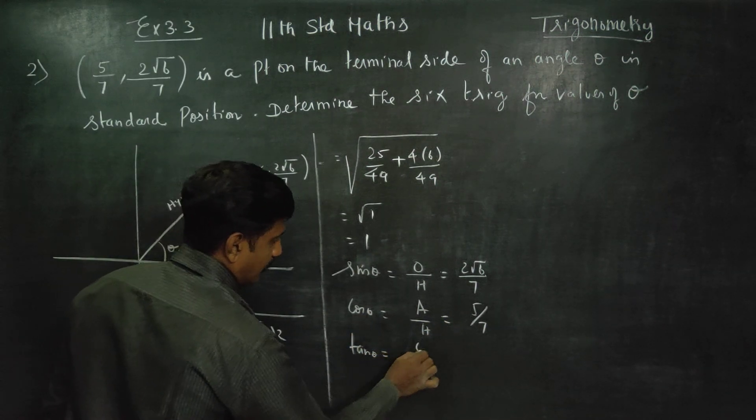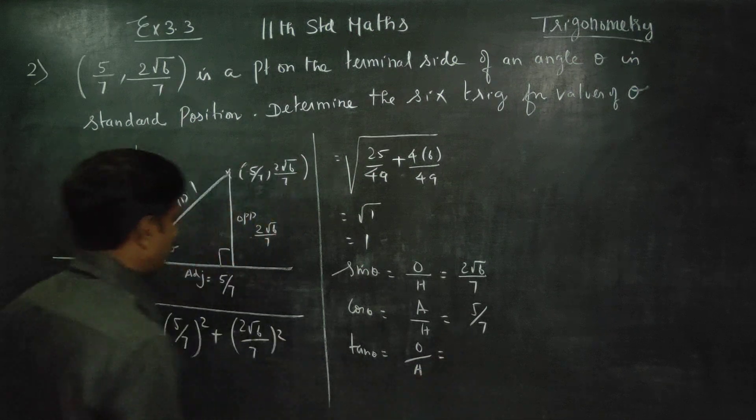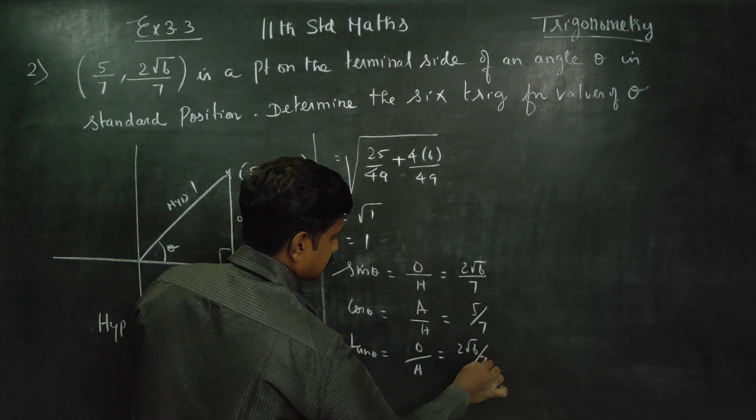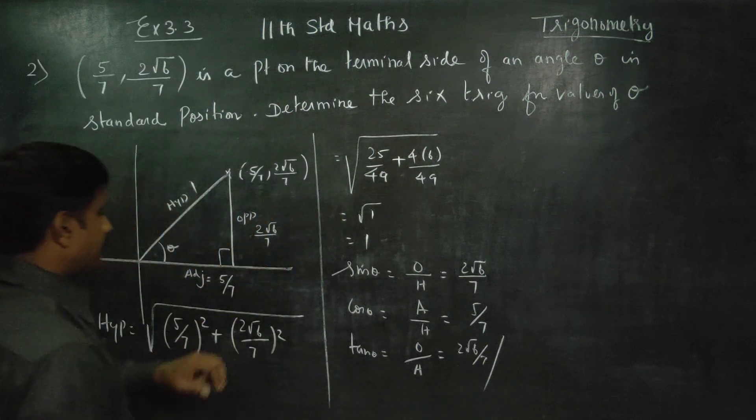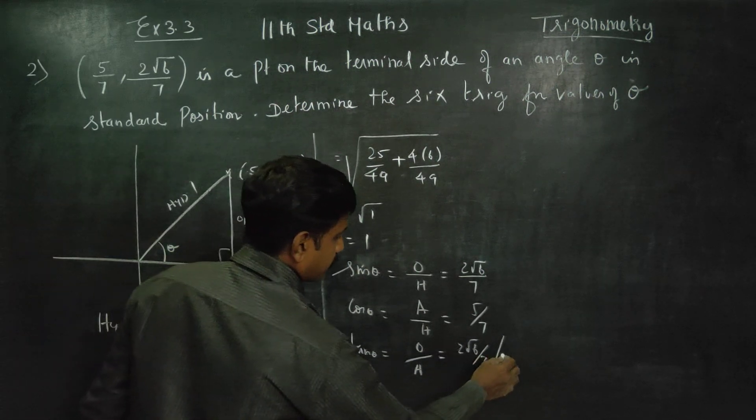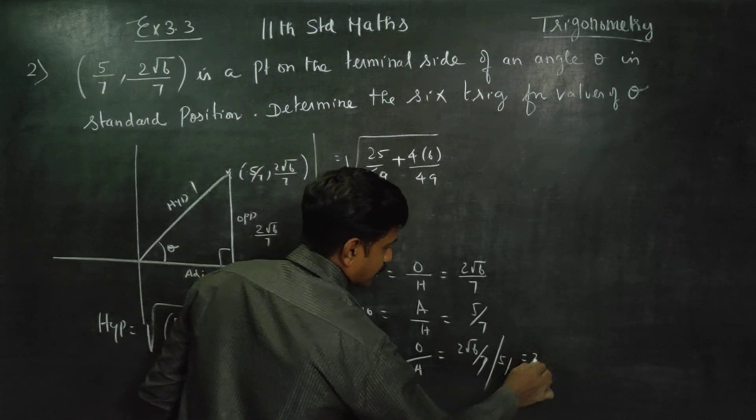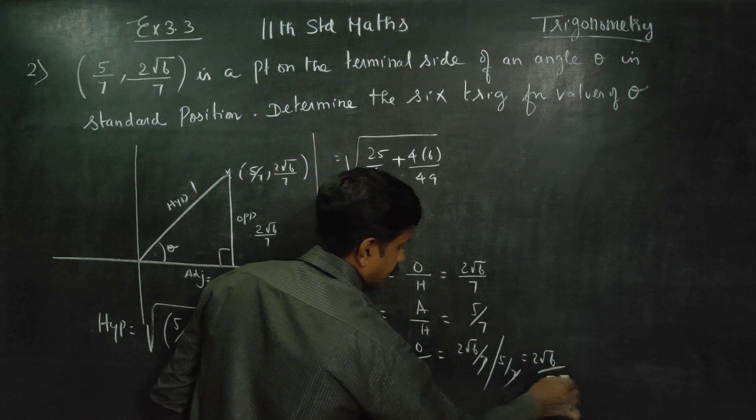Tan theta: opposite by adjacent. Opposite is 2 root 6 by 7, divided by adjacent which is 5 by 7. The 7s cancel out. Therefore, your answer is 2 root 6 by 5.